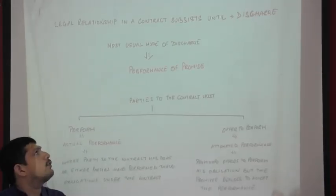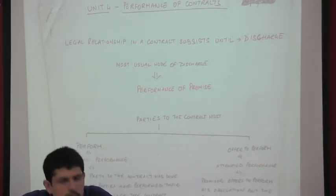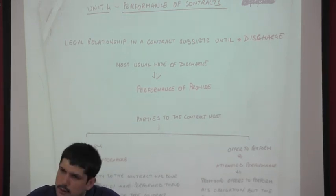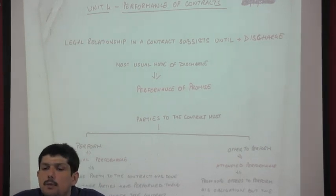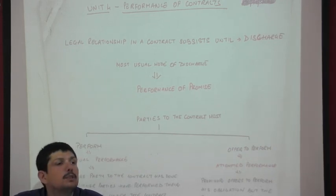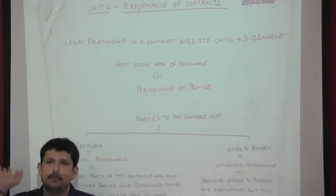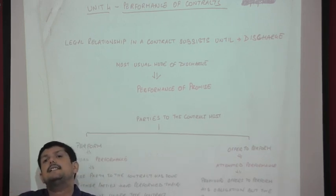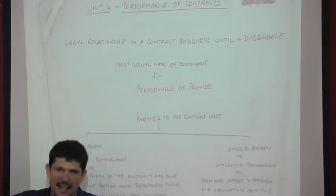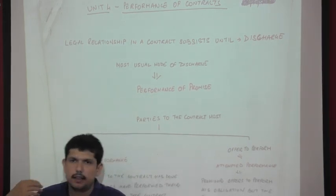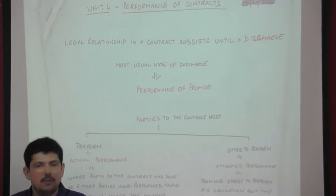To summarize Unit 4 so far: the most common mode of discharge is performance. Performance is of two types — actual performance, where both parties fulfill their obligations and the contract is discharged, and attempted performance, where the promisor tries to perform but the promisee does not accept. It is important to write such small examples in notes because exam questions may come as situational problems.